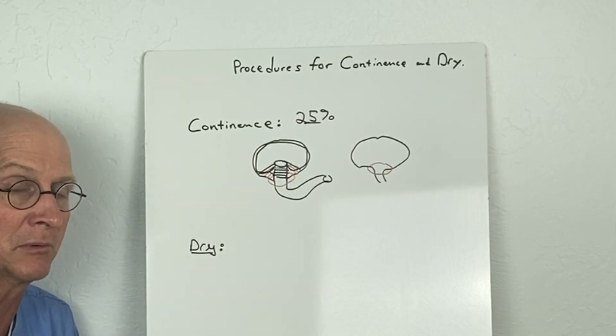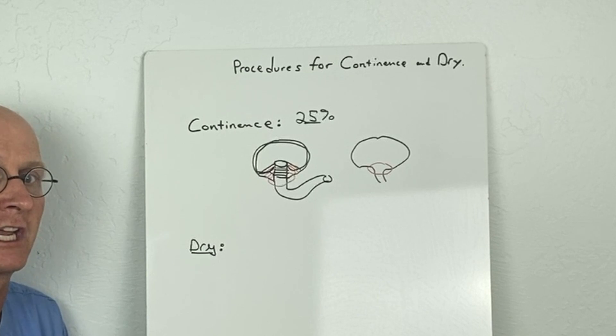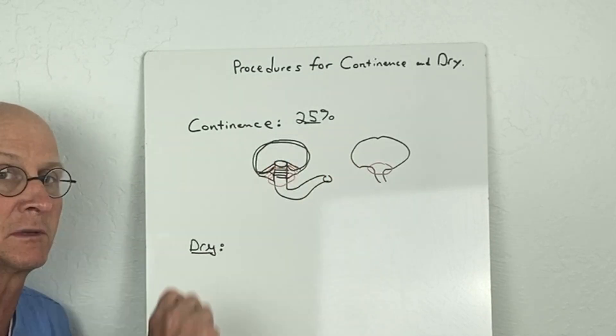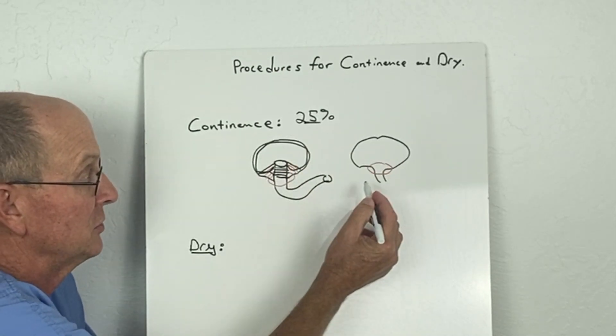Both the modern stage and the complete primary repair may require some type of bladder neck procedure. There's also a Mitchell bladder neck procedure for continence.